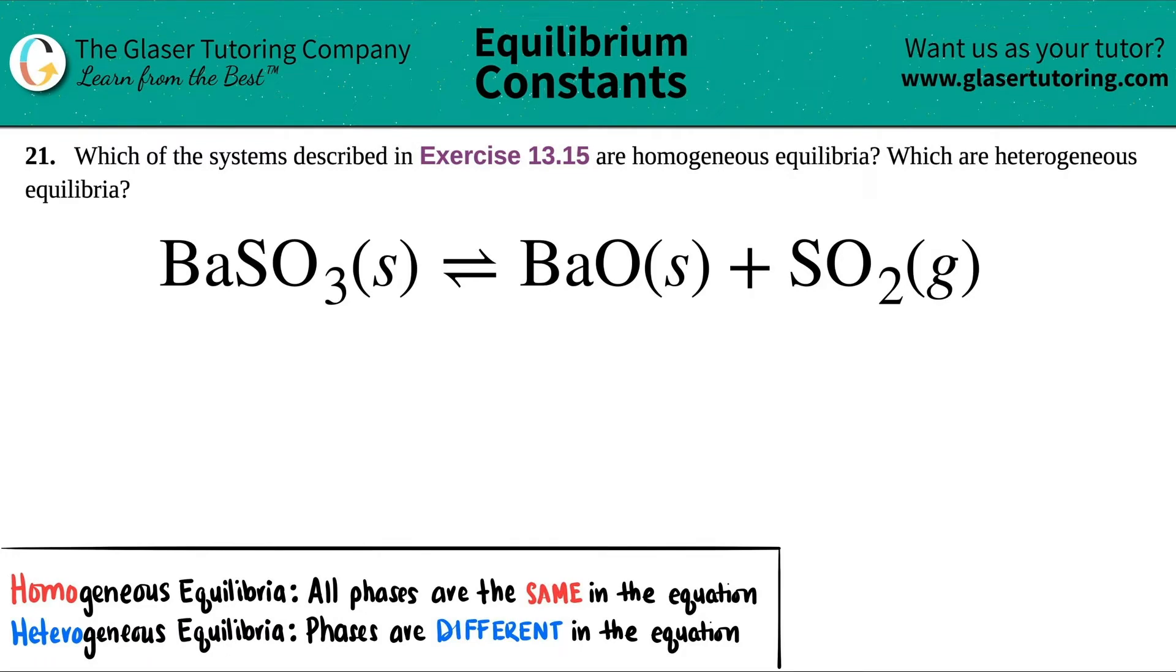Number 21, which of the systems described in exercise 13.15 are homogeneous equilibria and which are heterogeneous equilibria?